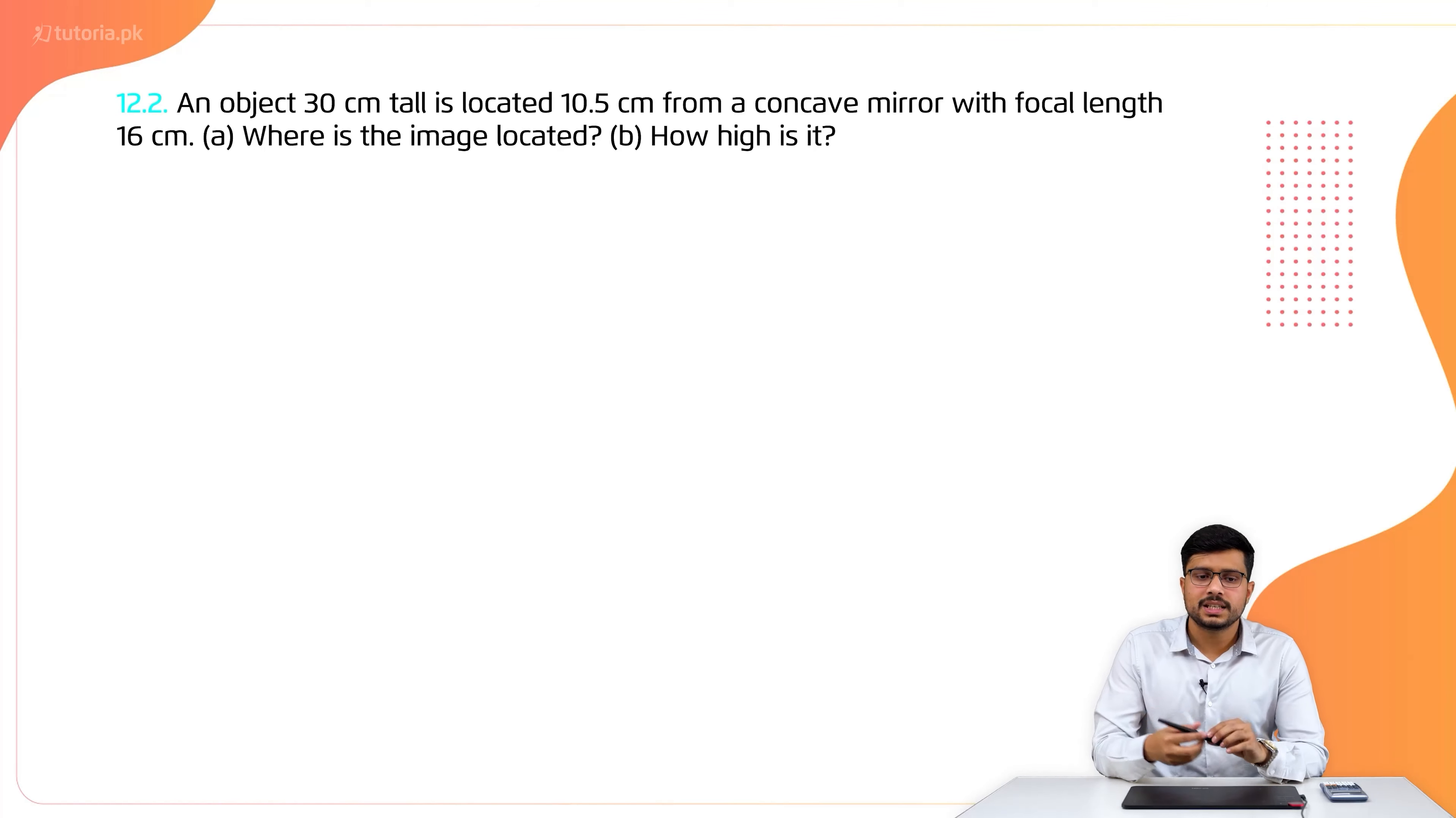I'll start my next numerical, which is numerical number 2. An object 30 cm tall is located 10.5 cm from a concave mirror with a focal length of 16 cm.